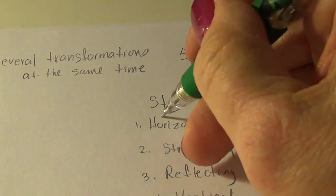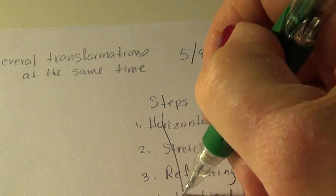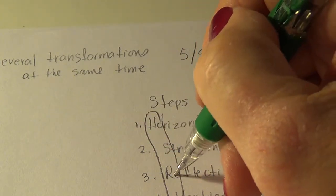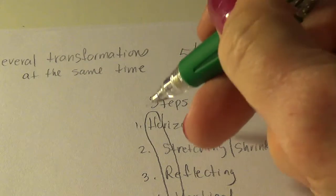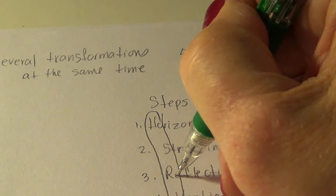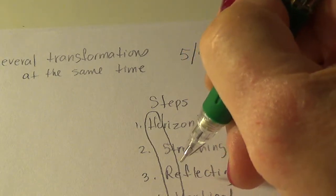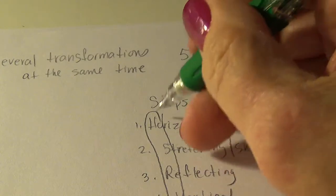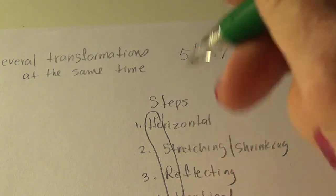So can we think of a saying that helps us with that HSRV. How about headstrong, this is reflecting, starts with an R. Alright, headstrong, rebellious, and violent.